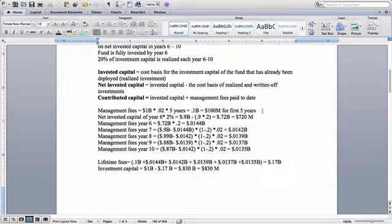So that's 100 million in the first five years, or 0.1 billion. The net invested capital, we have to use the invested capital minus the cost basis of realized and written-off investments. So eventually we will add these all up.